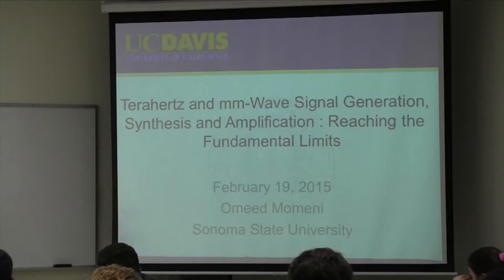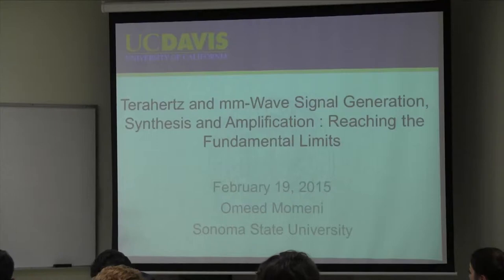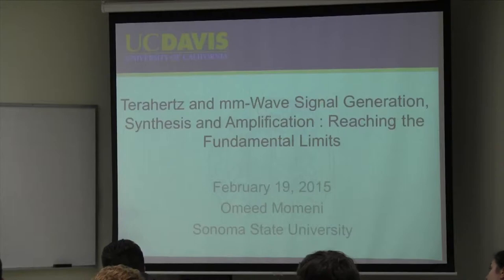To give you a sense of what those frequencies are, look at your cell phones and Wi-Fi routers — those are around 1, 2, 4, 5 gigahertz. What I'm going to talk about is above 30 gigahertz, and specifically the blocks I'll cover are around 100, 200, 400, and 500 gigahertz. Believe it or not, today you can have all these circuits in a CMOS IC.